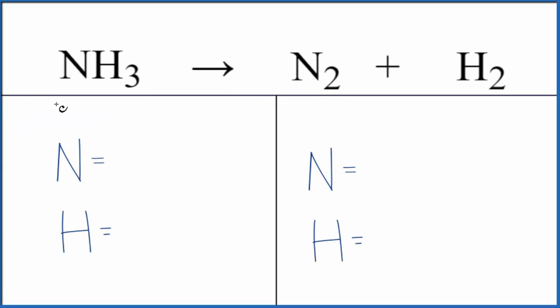Let's balance the equation for the decomposition of ammonia, that's NH3, and it decomposes into N2 and H2, nitrogen gas and hydrogen gas.